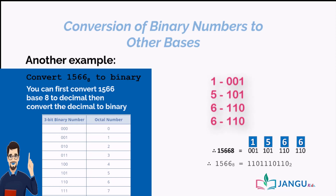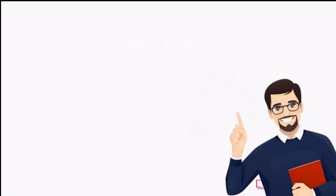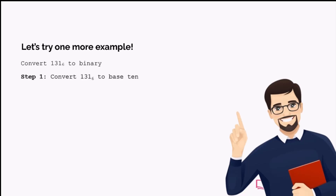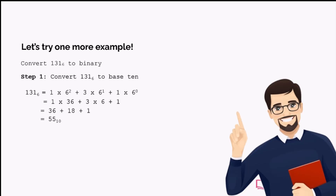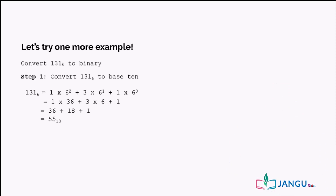Have you gotten the same answer as the one on the screen? Excellent! Well done! Let's try one more example. Convert 131 base 6 to binary. To do this, we first convert 131 base 6 to a number in base 10. 131 base 6 equals 1 times 6 raised to power 2, plus 3 times 6 raised to power 1, plus 1 times 6 raised to power 0. That equals 1 times 36 plus 3 times 6 plus 1, which gives us 36 plus 18 plus 1 equals 55 base 10.